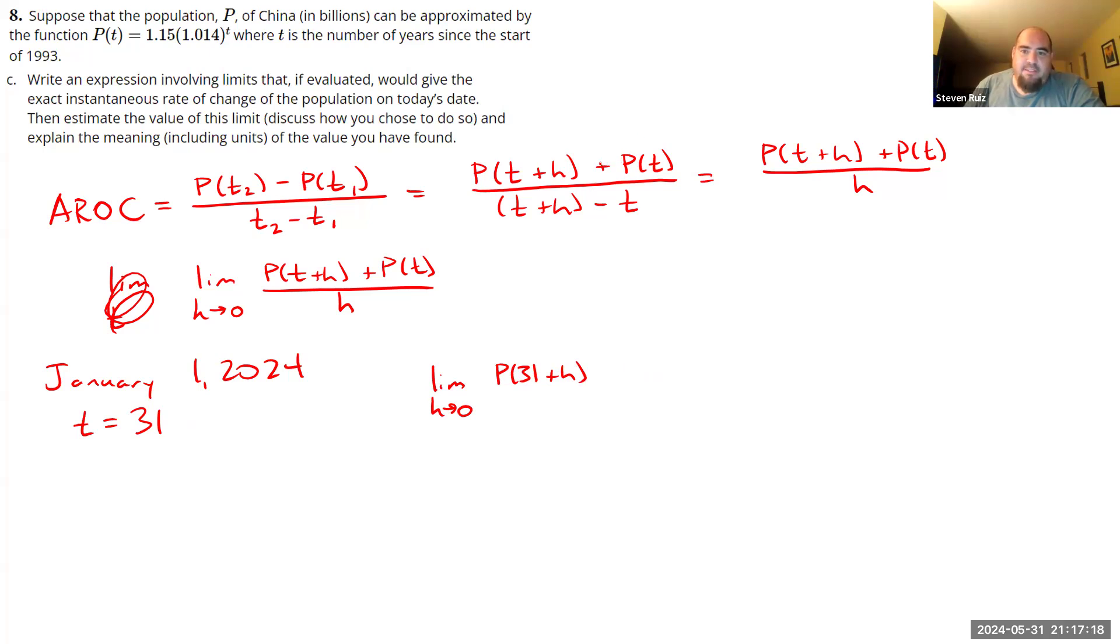And by the way, I am really messing this up. Very, very important modification needs to be made here. You don't calculate slope by adding these two values together. I want to know how far apart they are. I want to know what their difference is. I want to be subtracting them. So P of 31 plus H minus P of 31 over H.